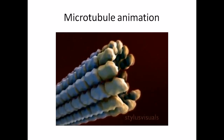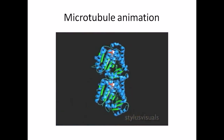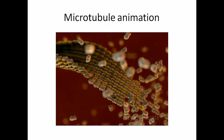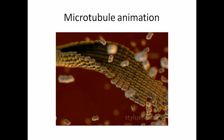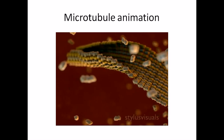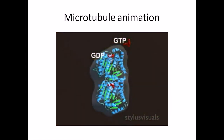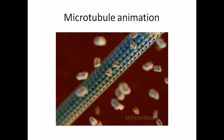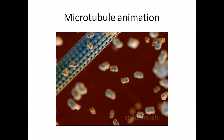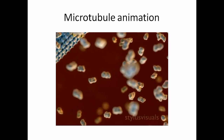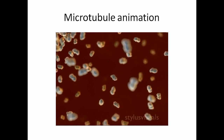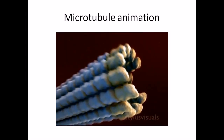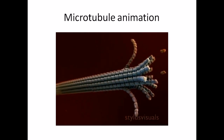Microtubules are dynamic cytoskeletal polymers essential for all cells. They are made of the protein tubulin, an alpha-beta heterodimer that self-assembles head to head, making protofilaments which associate laterally to form a cylindrical wall. Tubulin binds GTP, which is hydrolyzed to GDP during polymerization. The GDP-bound form of tubulin is unstable, giving rise to microtubule dynamic instability, by which microtubules switch between growing and shrinking phases.